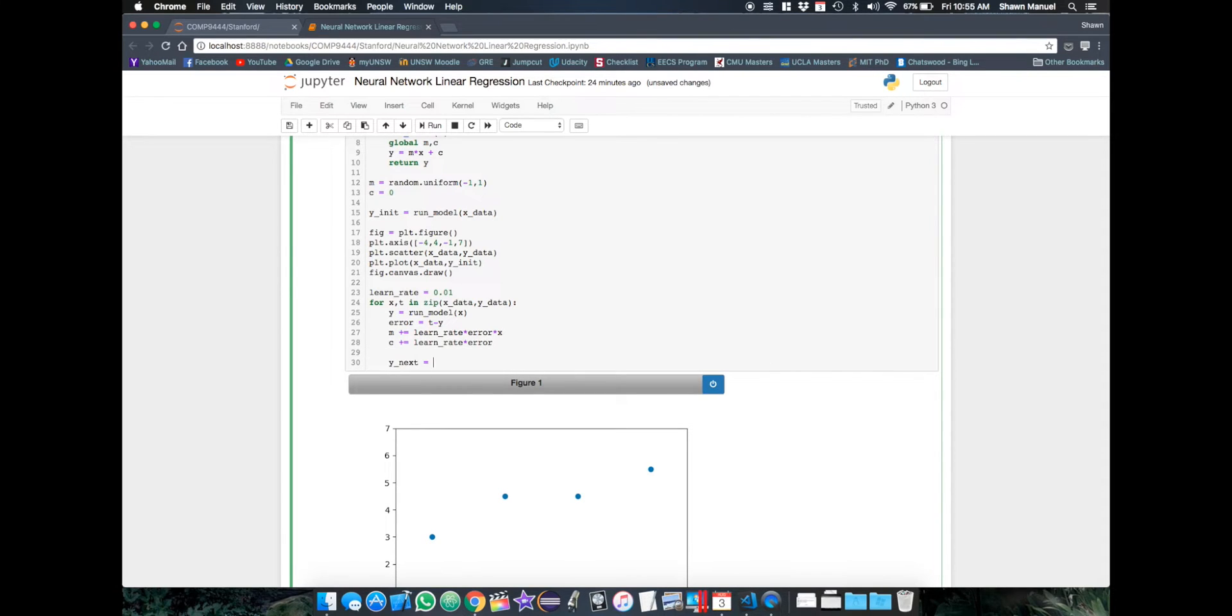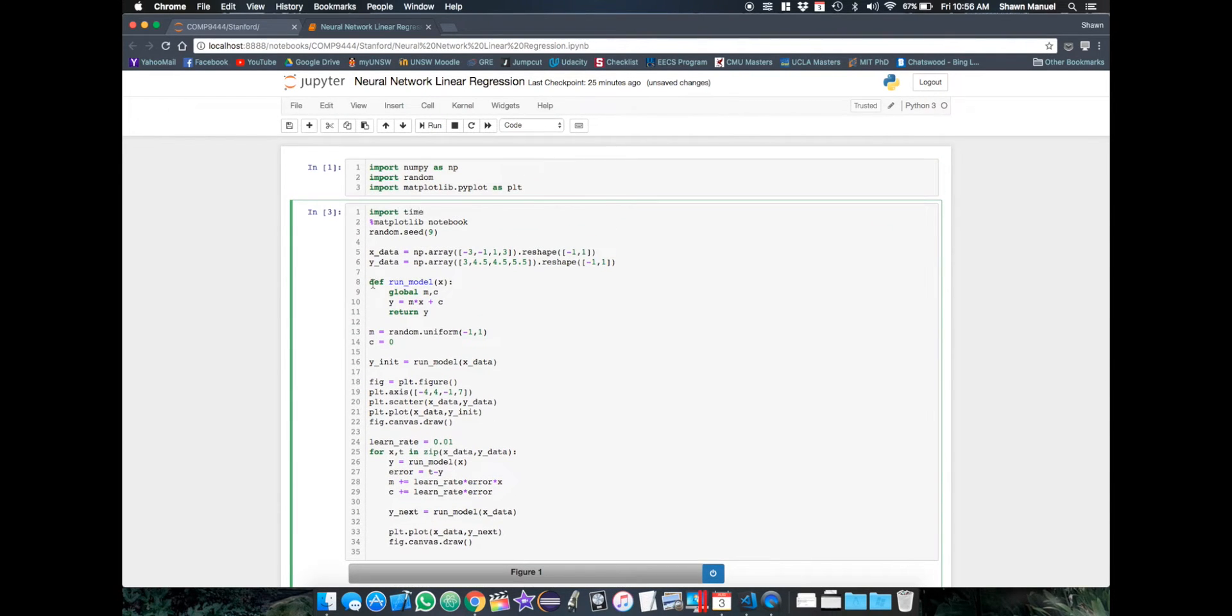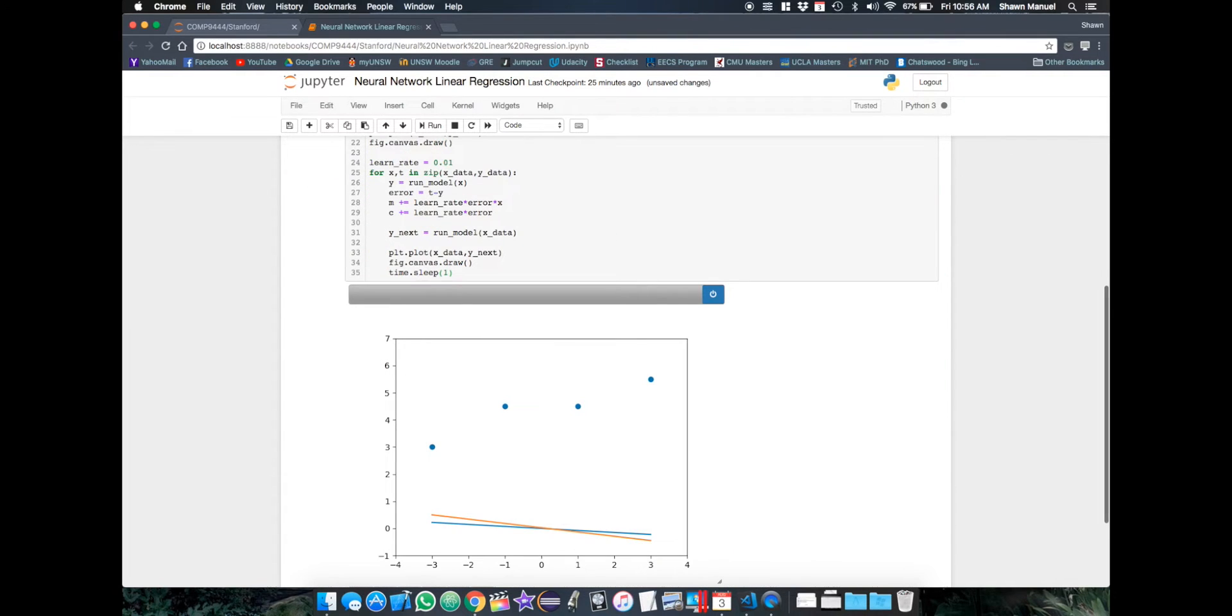So as we do this, let's also plot the updated model to see how it's improving. So we'll also sleep for one second so that we can see how each model is being produced. So as we can see with every data point, the predicted line is slowly shifting towards the data.